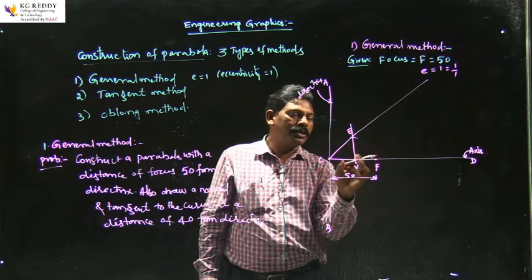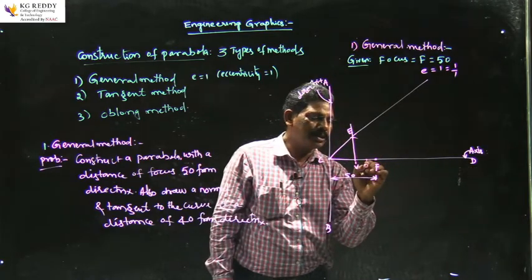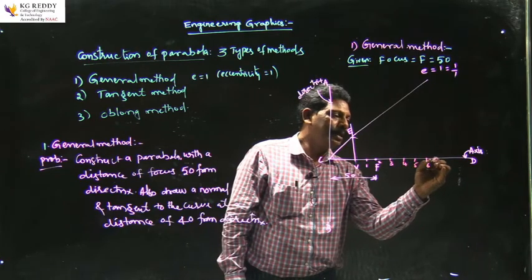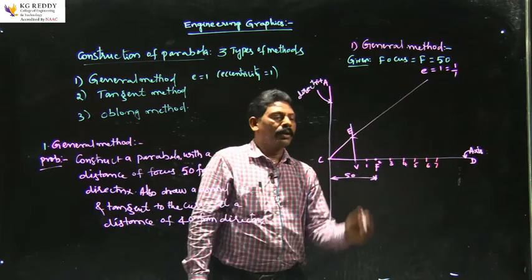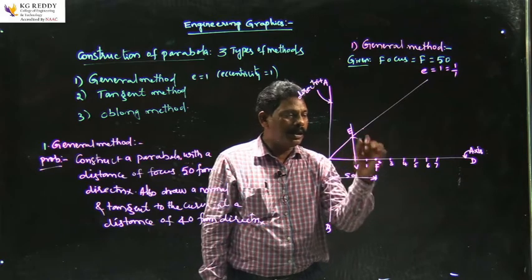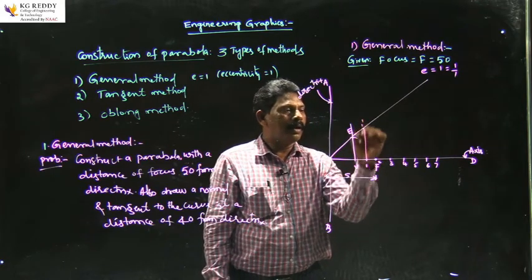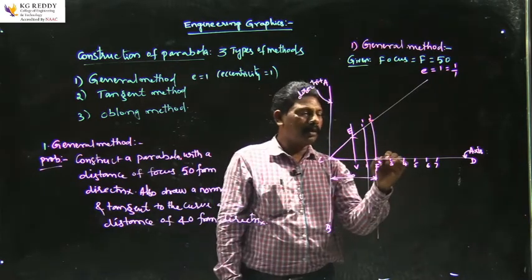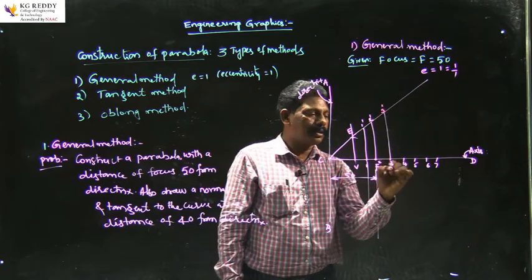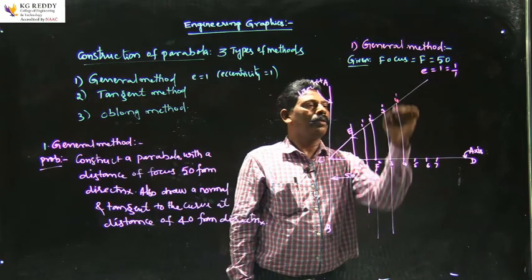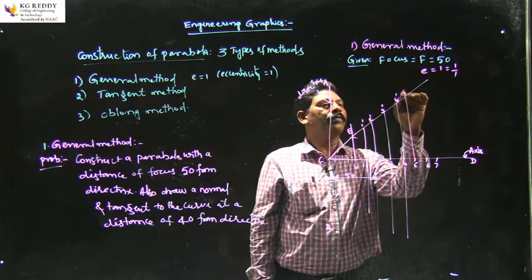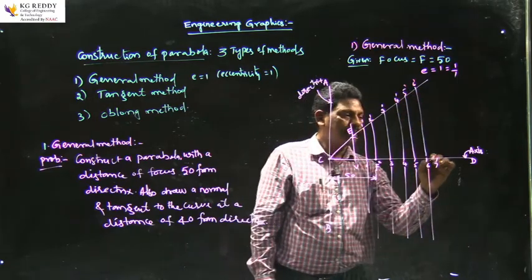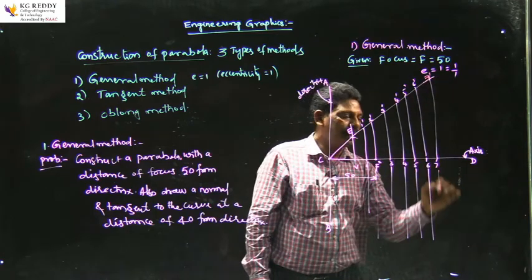From V, divide the axis into some equal or unequal parts towards the right side — label them 1, 2, 3, 4, 5, 6, 7 and so on. From each division point, draw lines parallel to VE, intersecting the extended CE line at points 1', 2', 3', 4', 5', 6', 7' — extending both upward and downward directions.